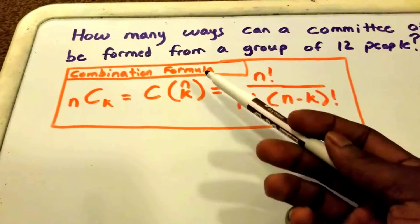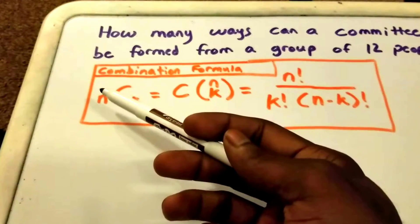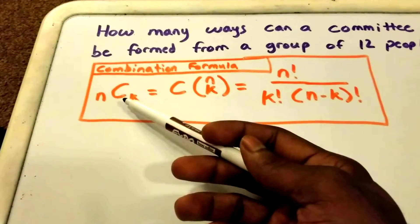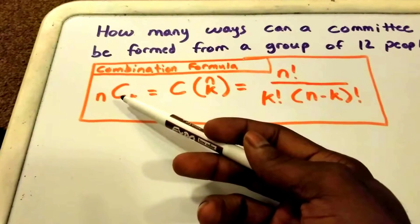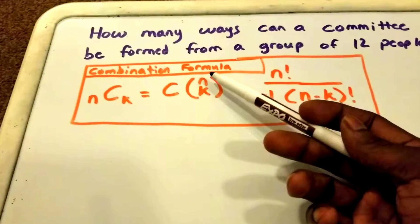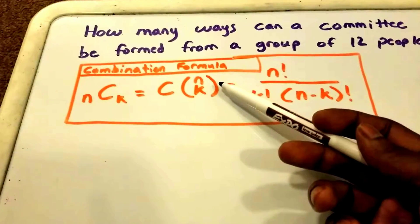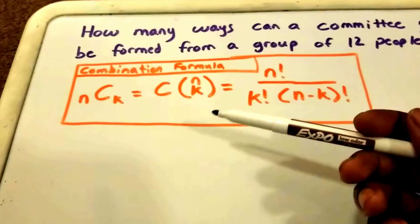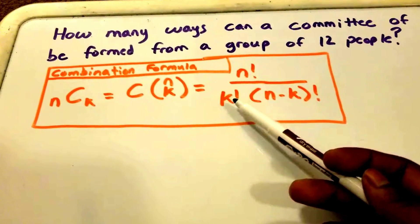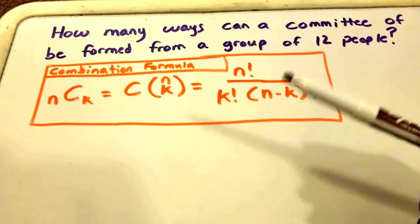In our orange rectangle here I have the combination formula. We have nCk, where n is our set and k is our subset. C stands for the combination formula. It also looks like this: C with a left parenthesis, n on top and k on the bottom, then a right parenthesis. Both of these formulas equal n factorial divided by k factorial times n minus k factorial.